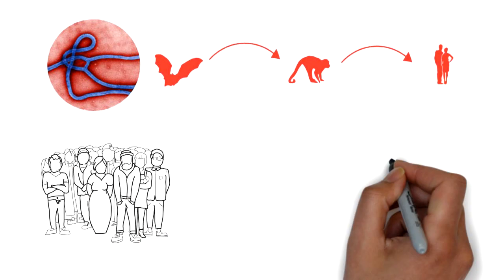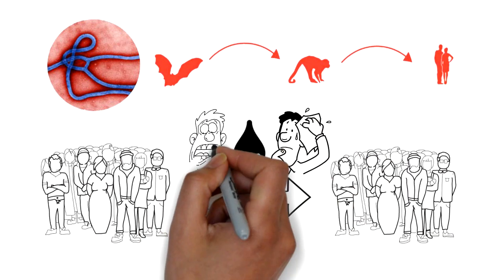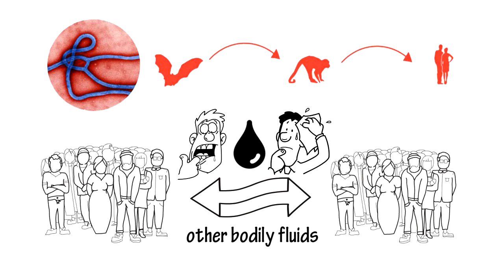Ebola spreads through wild animals such as monkeys and gorillas into humans, then human-to-human contact via blood, sweat, saliva, or other bodily fluids.